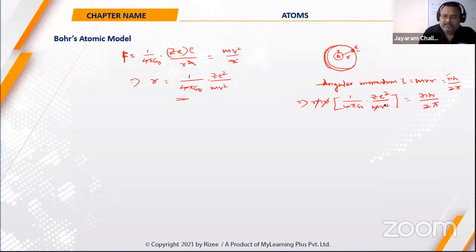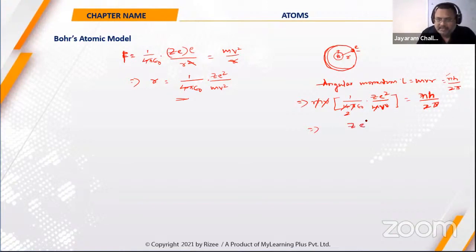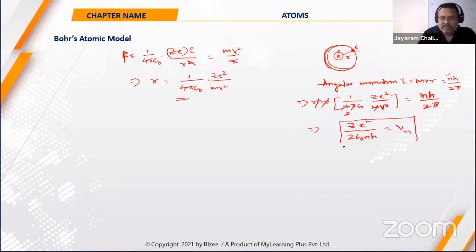Substituting the R value into the angular momentum relation and solving, we can find the velocity of the nth orbit: V = ZE²/(2ε₀nH). This is the formula for the velocity of the nth orbit.